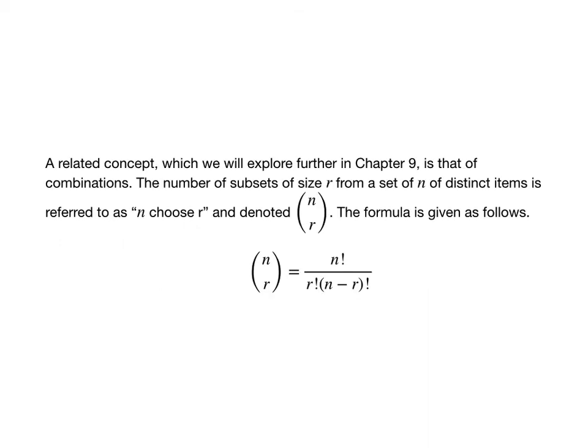Another related concept that we'll see in chapter 9 is that of combinations. The number of subsets of size r from a set of n distinct items is referred to as n choose r, and it's denoted with this notation here with the parentheses and the n and the r. There are other ways of expressing combinations as well, and we'll explore that further when we get to chapter 9.